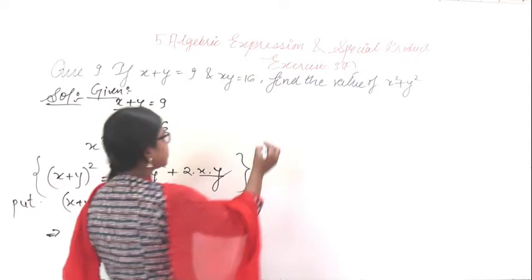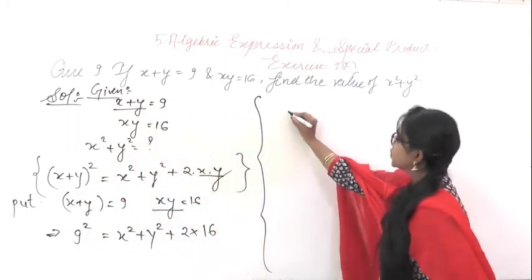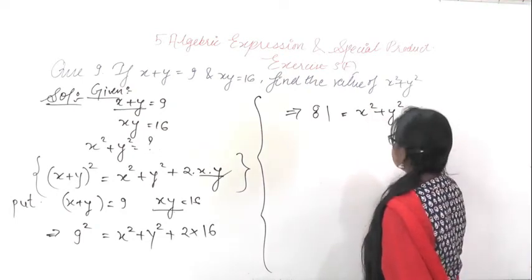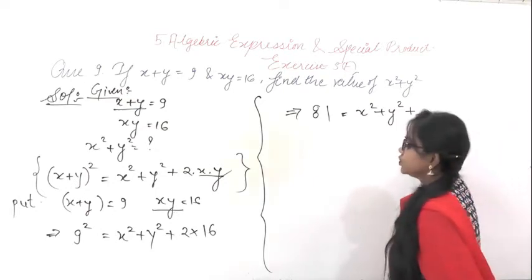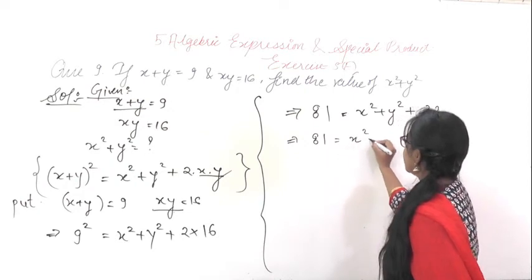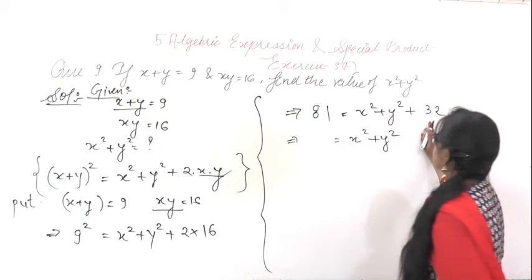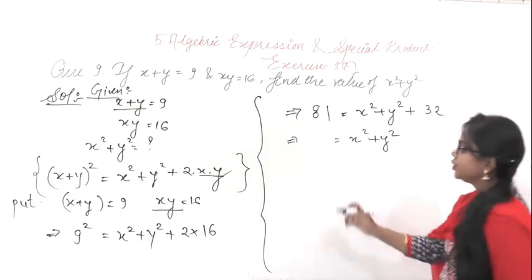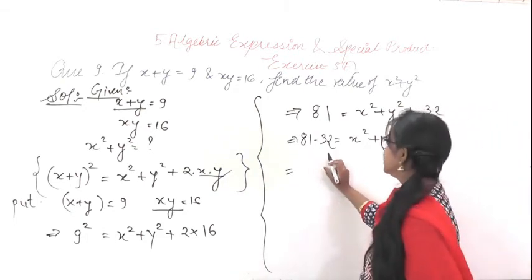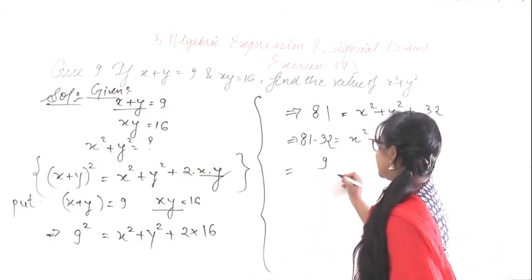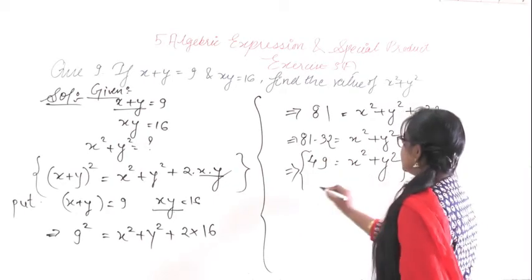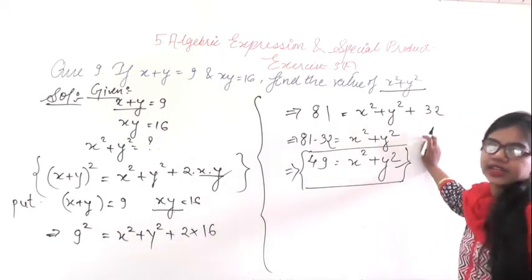So 81 = x² + y² + 2 × 16 = x² + y² + 32. Transferring 32 to the left-hand side: x² + y² = 81 − 32. Subtracting: 81 − 32 = 49. So x² + y² = 49. This is the answer because we had to find the value of x² + y² only, and that is equal to 49.